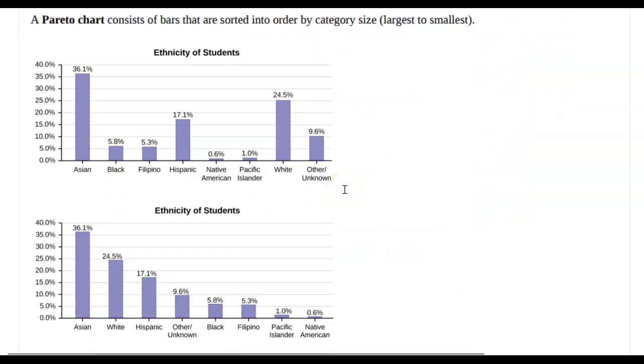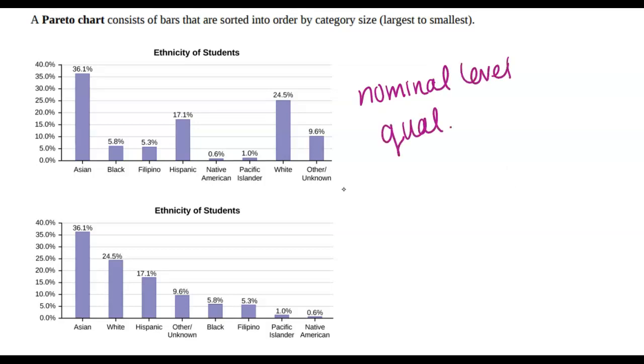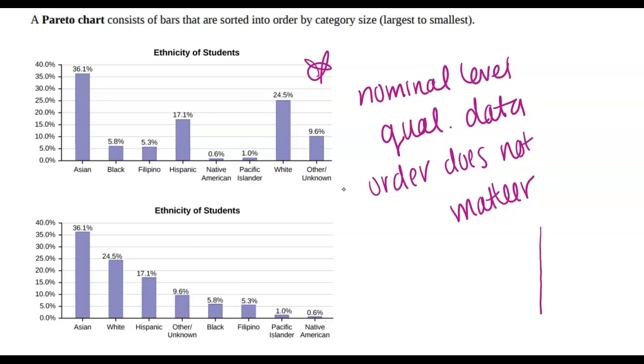All right, the last type of chart is a Pareto chart. Now, if you are looking at nominal level qualitative data, meaning order does not matter. In this case, it's ethnicity. Okay, the ethnicity of students is what we're looking at. This graph would be just fine. Like that's probably the order in which the answer choices are on the survey.